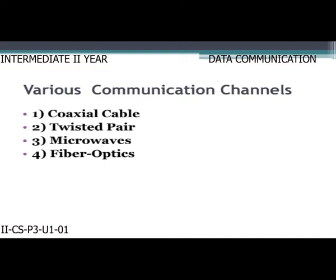There are four types of communication channels: first, coaxial cable; second, twisted pair; third, microwaves; fourth, fiber optics.